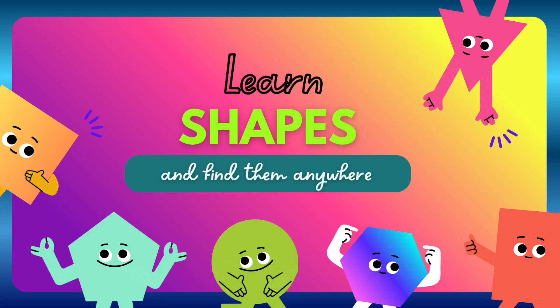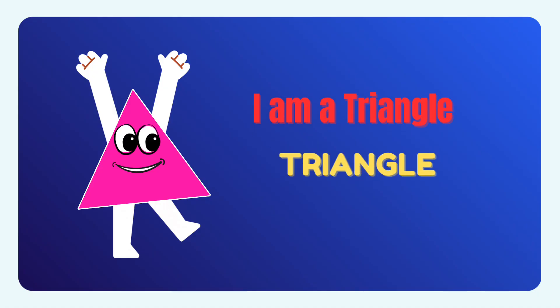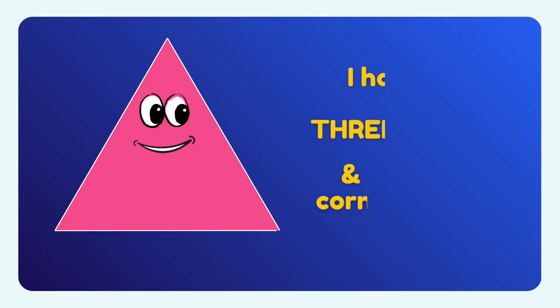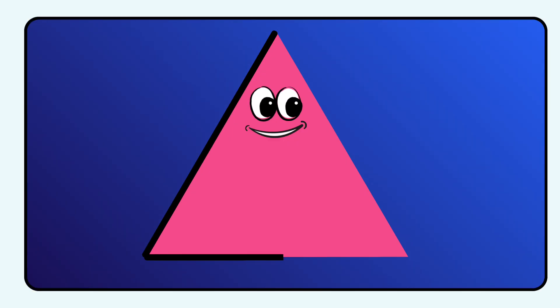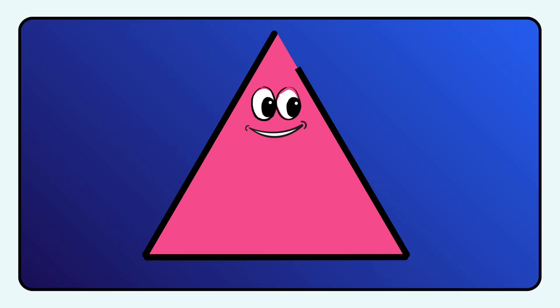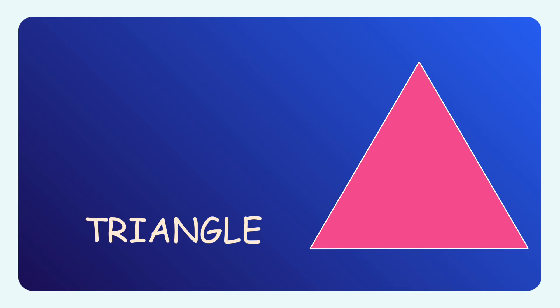Hello kids, let us learn about the shapes and you can find them anywhere. Come on, let's go! I am a triangle. I have three sides and three corners too. Let's see: one, two, and three. Now we see our three corners: one, two, and three. My three sides and three corners make me a triangle.